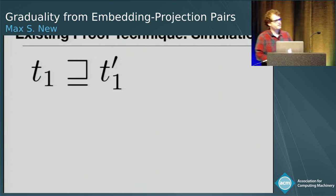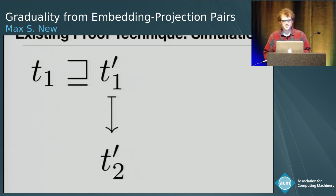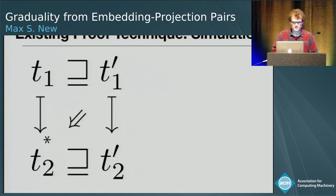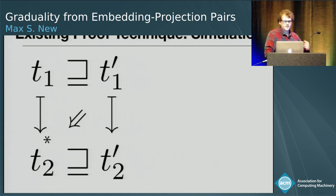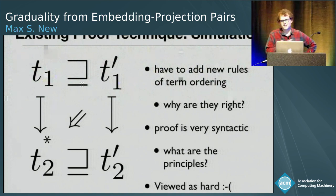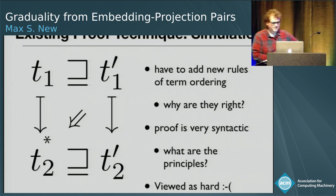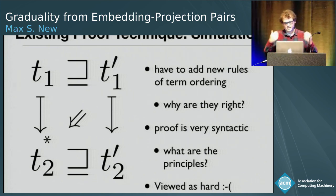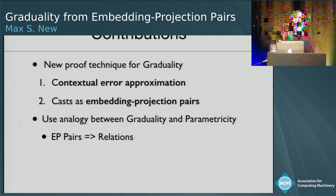Now we have this nice property — how do we prove it? In the original paper, they proved this by a simulation argument: if T1 is less precise than T1 prime and T1 prime takes a step to T2 prime, you need to come up with some T2 that is less precise than T2 prime. It's fine to prove things by simulation, but it's a tedious argument. They have to add new rules — make more terms related — for the inductive hypothesis to go through, so it's unclear why those were the right rules to add. The proof is very syntactic and not very enlightening. Sadly, not many people are proving this graduality property; there have been many papers that explicitly wanted it as a design goal but didn't prove it because it was too hard.